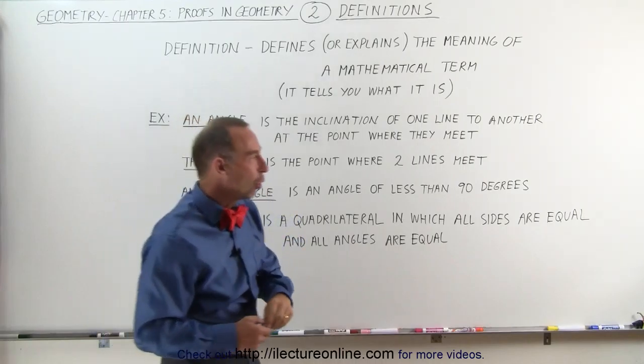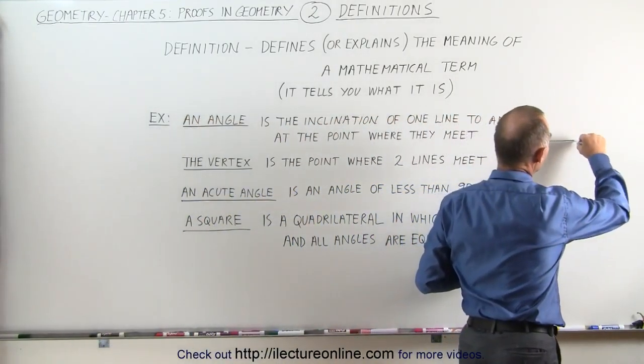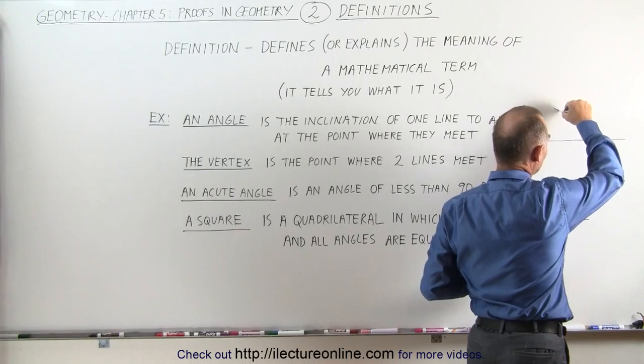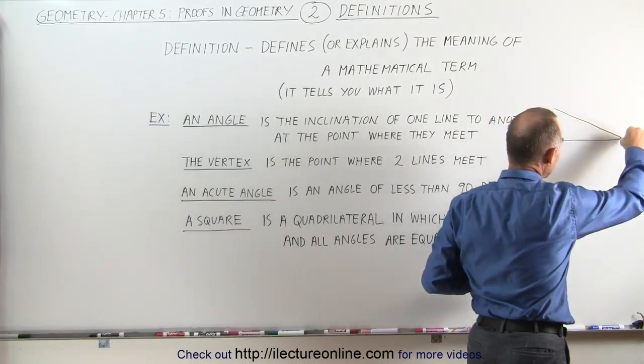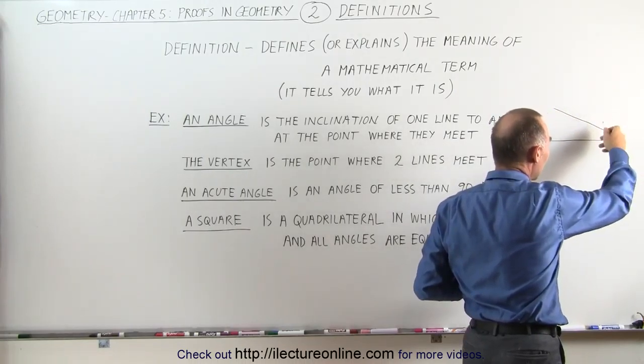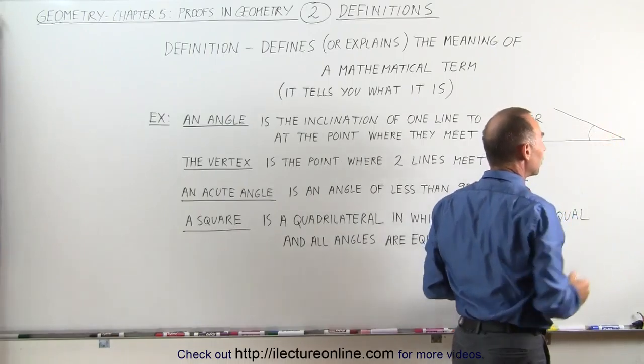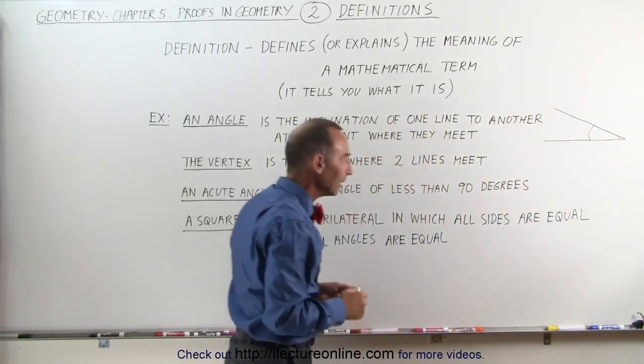Inclination means slope. In other words, if we take one line here and then we have another line of a different slope, and where they meet, the inclination forms an angle. There's the angle. That's how we define it.